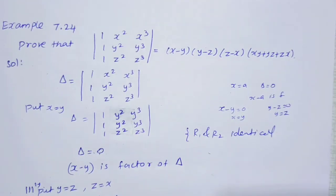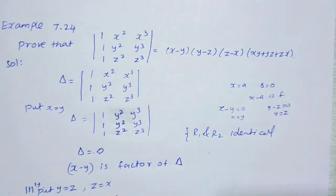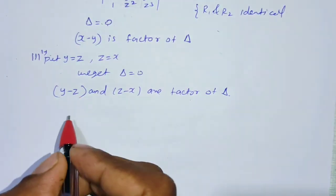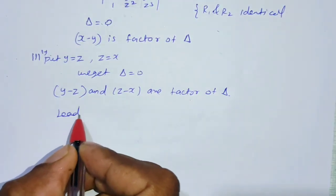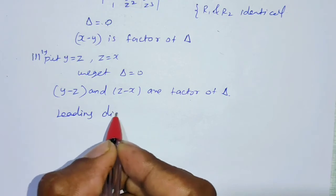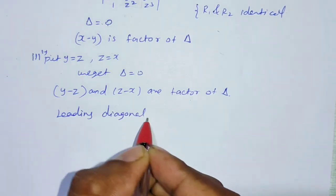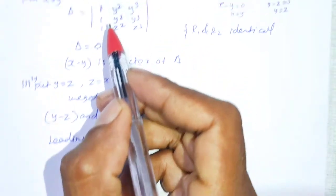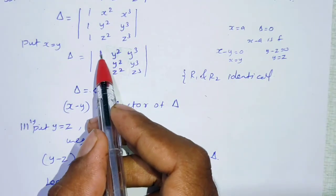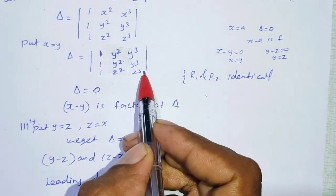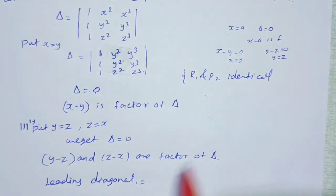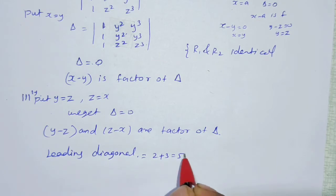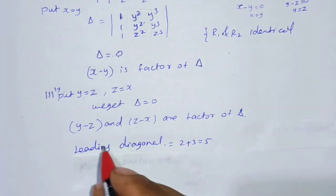Next, we find the degree. We look at the leading diagonal of the determinant matrix. The leading diagonal elements give degrees 1, 2, and 3. So the degree from the leading diagonal is 2 plus 3 equals 5.